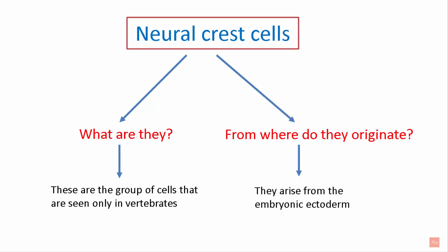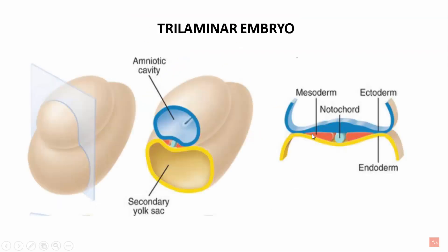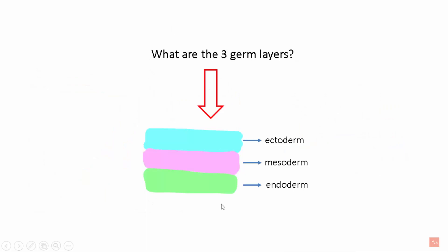Now, what is embryonic ectoderm? Let's learn about it in detail. This is an embryo. This structure is the amniotic cavity and this is the secondary yolk sac. In between these two structures there are three germ layers: the ectoderm, the mesoderm, and the endoderm.